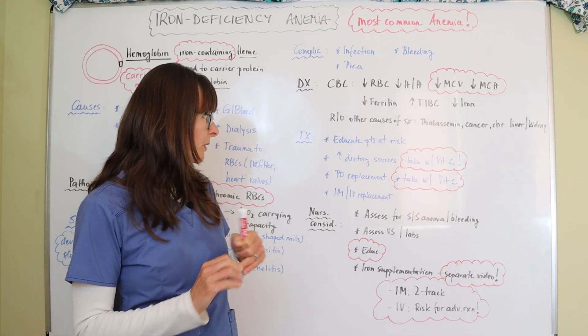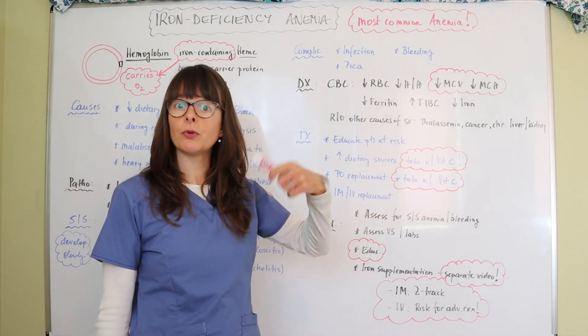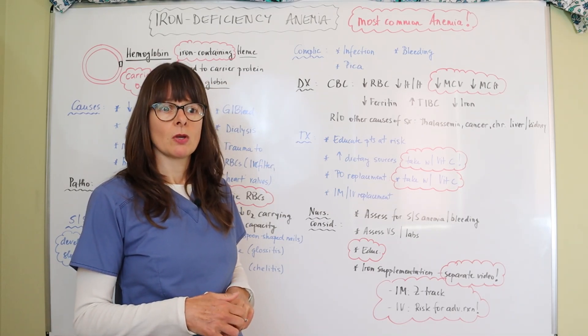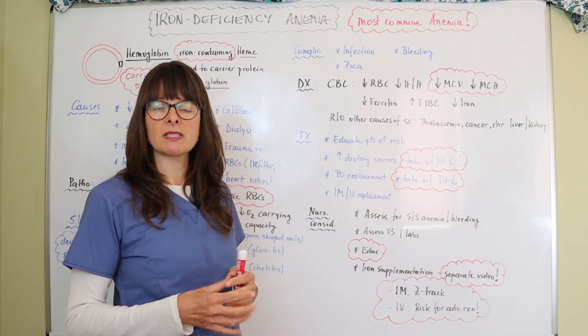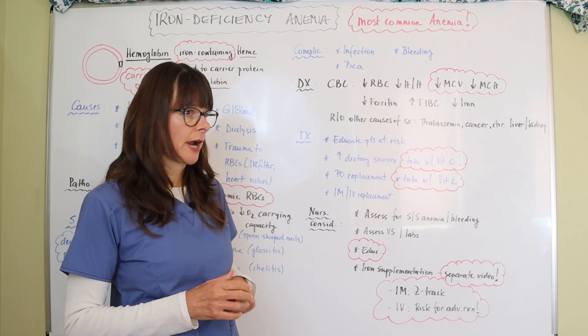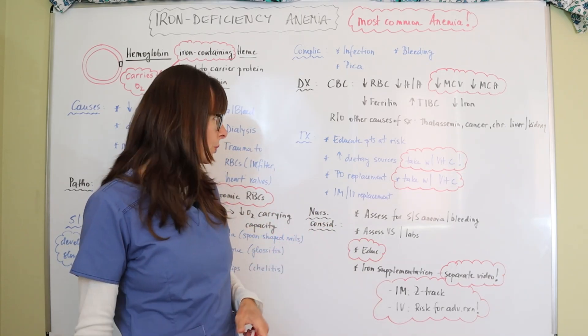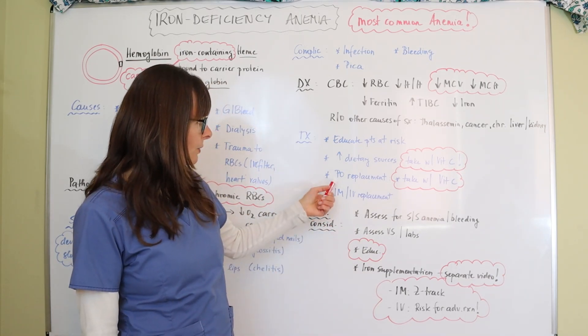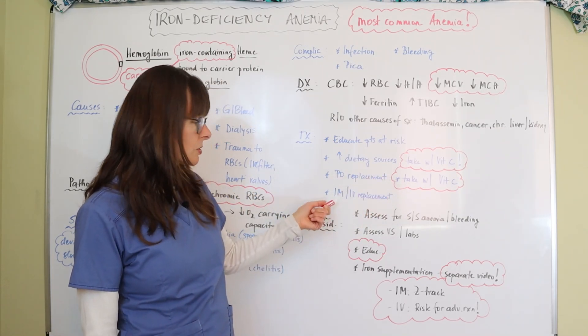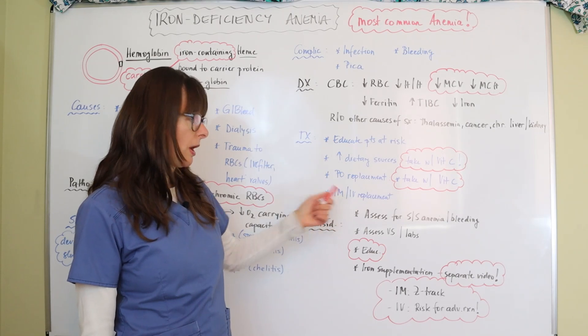Dietary sources of iron should always be consumed with vitamin C, so this might be if you recommend something with green leafy vegetables that they also have maybe some source of vitamin C with it which could be like an orange or a red bell pepper that kind of increases the absorption of the iron. For PO replacement it's also recommended to take with vitamin C, and then we can also if the deficiency is severe or there are some malabsorption concerns we can give it IM or IV.